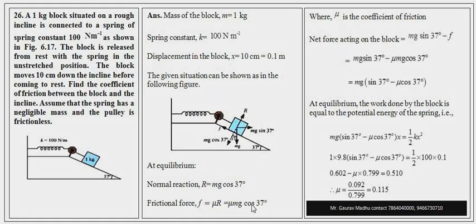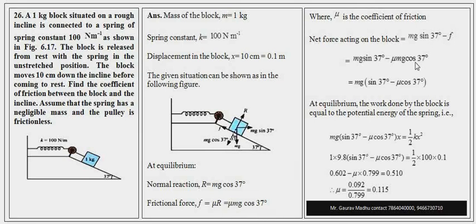mg sinθ component चाहता है कि body नीचे की तरफ आए, और friction oppose करता है। तो net force = mg sinθ − friction। Friction की value put करने पर net force = mg sinθ − μ mg cosθ = mg(sin37° − μ cos37°)।